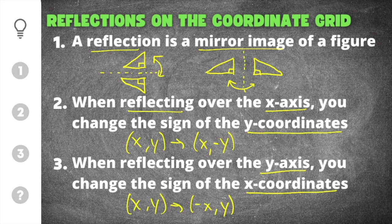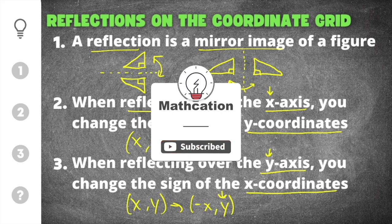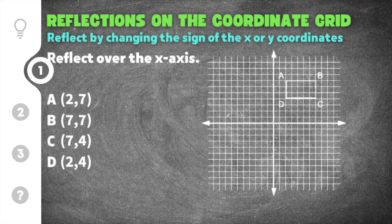An easy trick for remembering the rule is that whatever axis you reflect over, that coordinate will remain the same. So if you reflect across the x-axis, the x-coordinate remains the same. If you reflect across the y-axis, the y-coordinate remains the same. Don't forget to subscribe so you don't miss out on other helpful math videos. Let's get started on some practice problems.